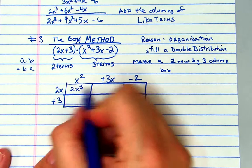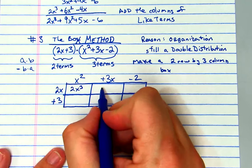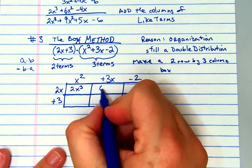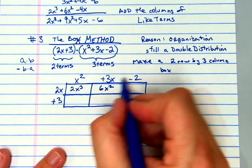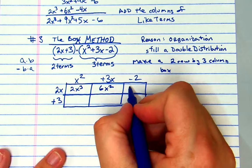So this is going to be 2x times x squared, which is 2x cubed. Now my row is 2x still times 3x. Two times three is six, x times x is x squared.